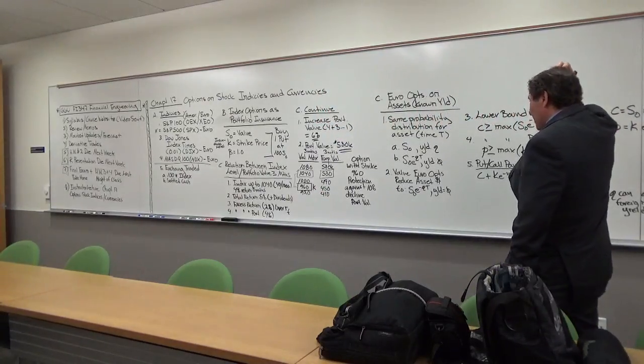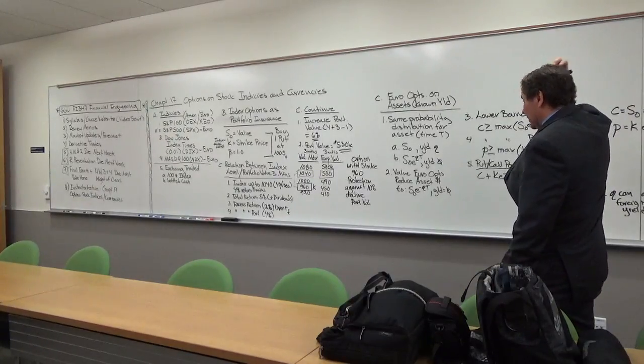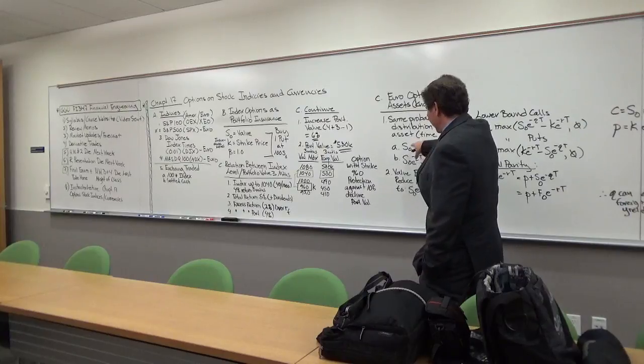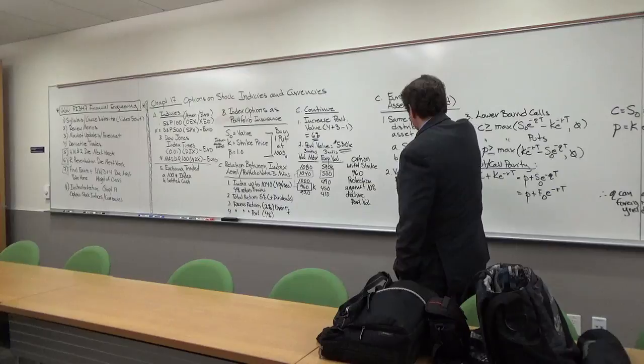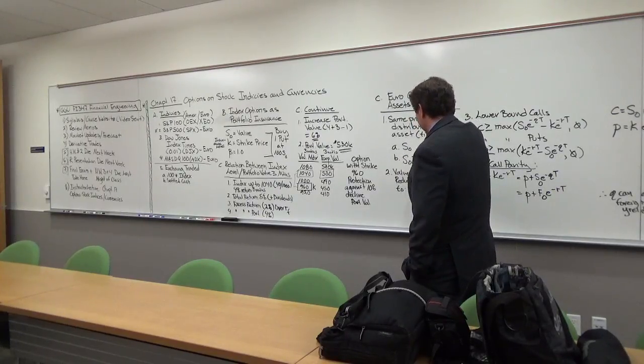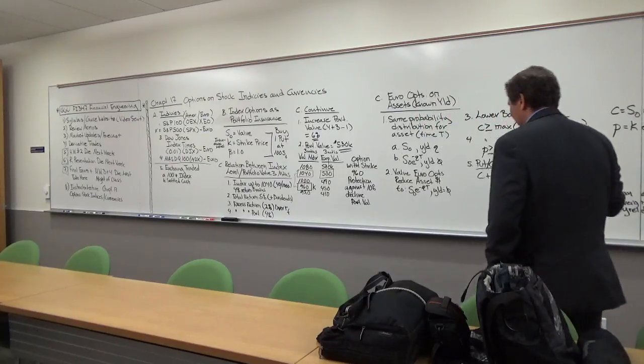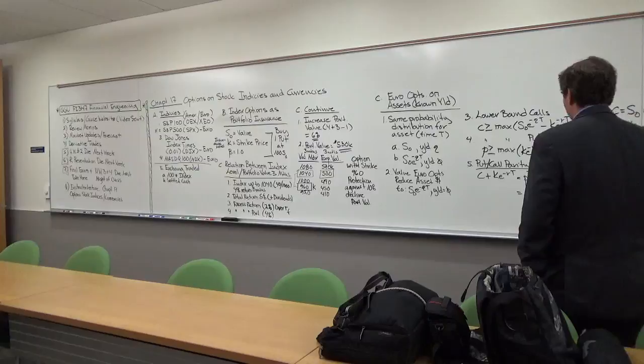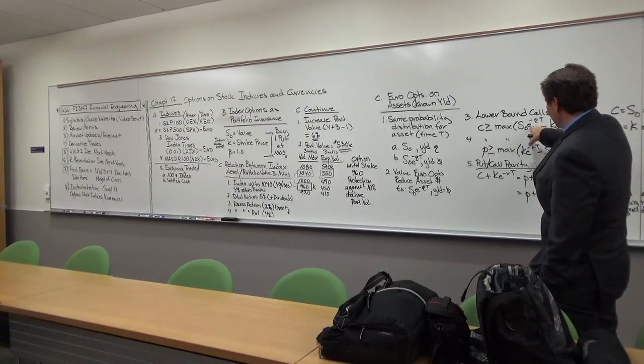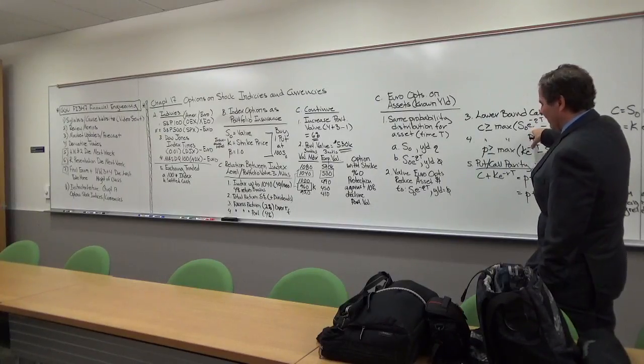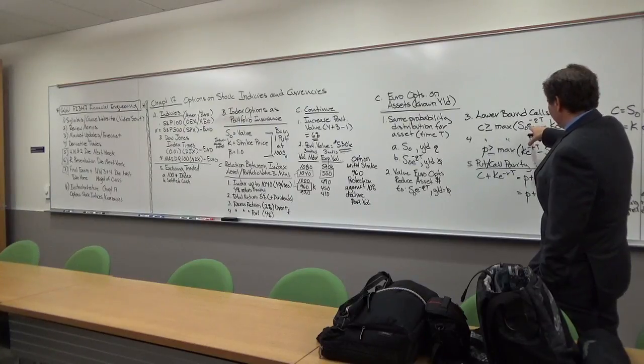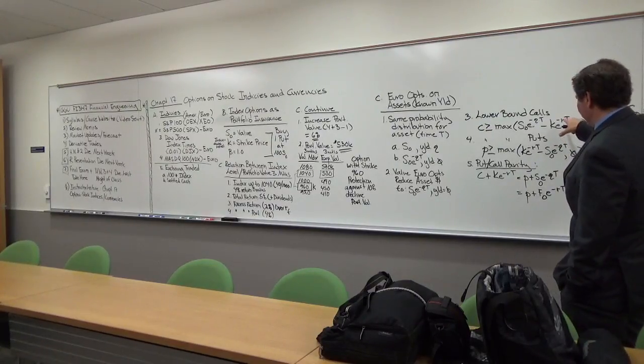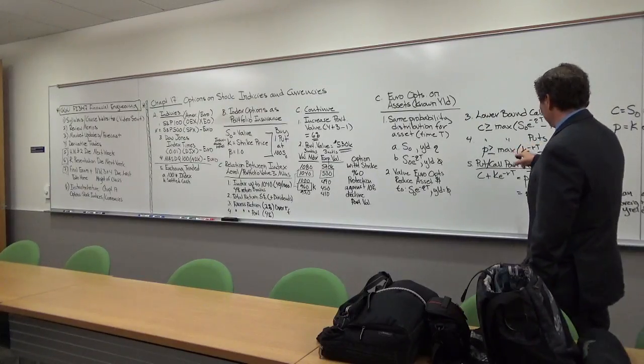The European options are the assets that have known yields, okay? And those yields would be dividend yields, okay? So you have to adjust for the dividend yield, so the dividend yield is Q. You have the current strike price, I'm sorry, the current value, and then you have the value in the future. The value in the future at the yield. So the value of the European option asset is actually reduced by the dividend. So the lower bound on the call options is the value of the price adjusted for the dividend and then the strike price adjusted for the interest rate.